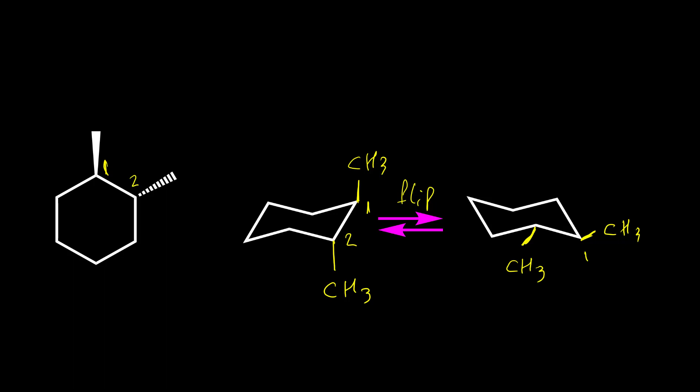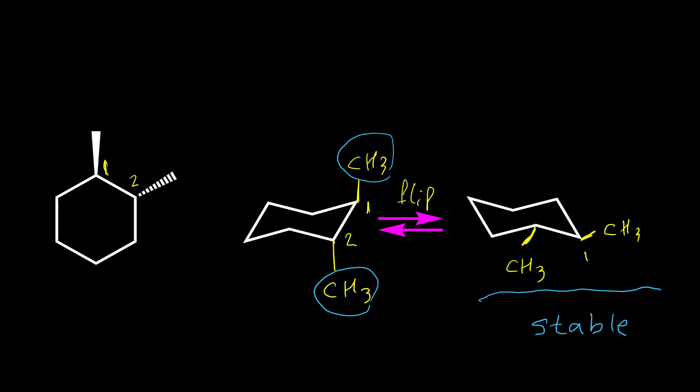In one conformer we have two methyl groups on axial position; in the other conformer we have no axial groups. The axial position has 1,3-diaxial repulsion, which is bad for the stability of the molecule. So the conformer with both methyls equatorial is more stable because it has no methyl groups in axial position.